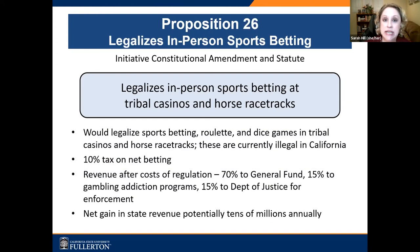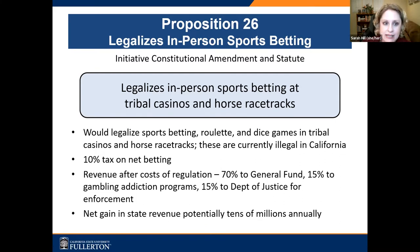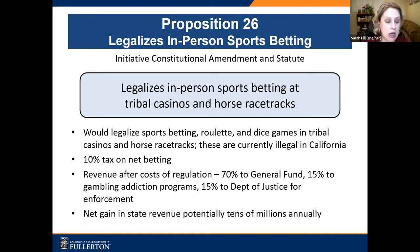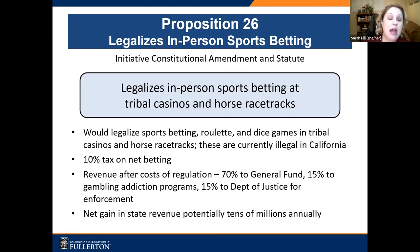Proposition 26 and 27 — you've surely heard a lot about these two gaming initiatives. The two sides have spent over $440 million campaigning for and against them — the most ever spent on initiatives of this kind. That's because if they pass, there's a lot of money at stake. The two do slightly different things.